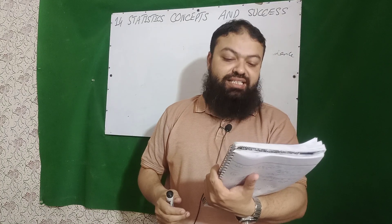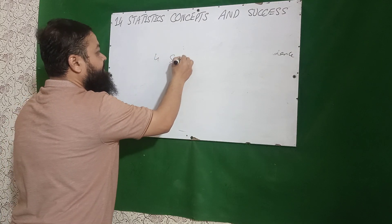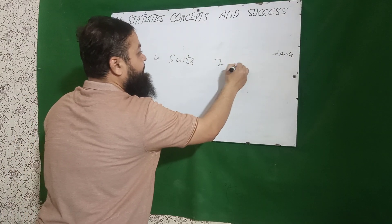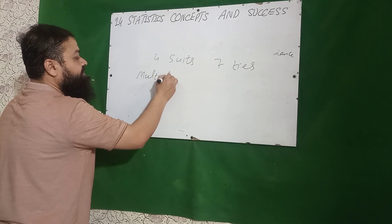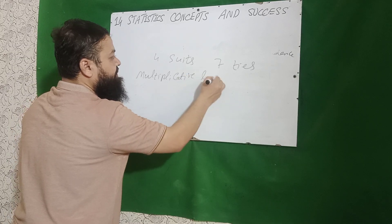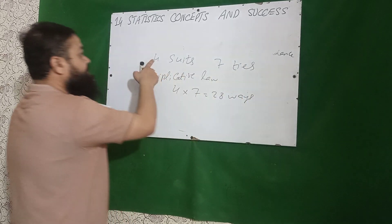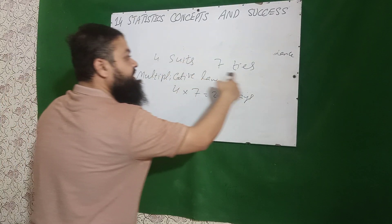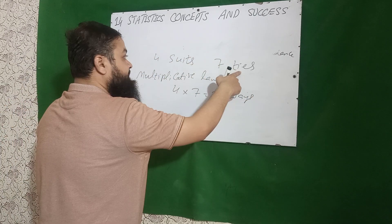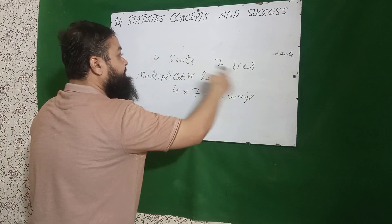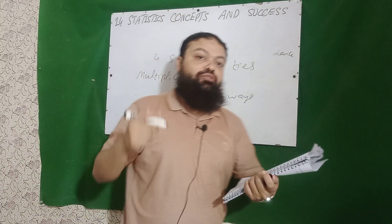A man has four suits and seven ties. In how many ways can he use a suit and tie? We use the multiplicative law: four multiplied by seven equals 28 ways. He can pair the first suit with all seven ties, second suit with all seven ties, third with all, and fourth with all — giving 28 total combinations.